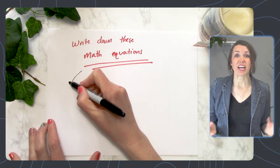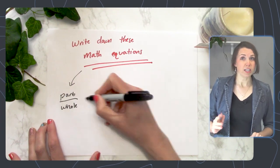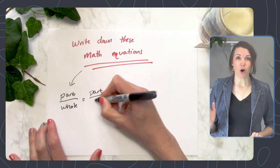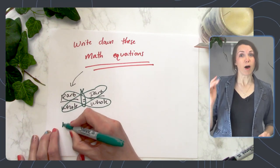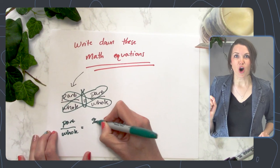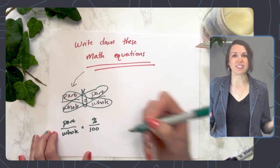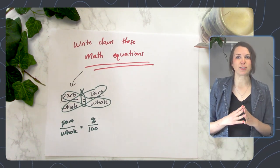My first equation is really just following ratios: part over whole equals part over whole. This is useful when you're trying to scale something, make something smaller or bigger, or when dealing with percents. For percents, it's part over whole equals percent over 100. With both of these, if you have three of the numbers, you can easily figure out the last one.